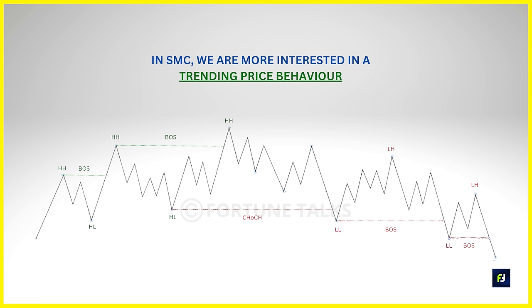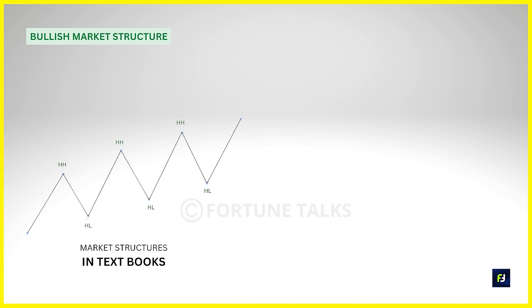This is a very basic way of understanding market structure, but let's build on top of this idea. In smart money concepts we are mostly interested in trending price action compared to sideways or range-bound price action — though this does not mean we can completely avoid ranges. Further in this course we will discuss how to trade range price action. For now, let us focus on the two main structures based on SMC: the bullish market structure and the bearish market structure.